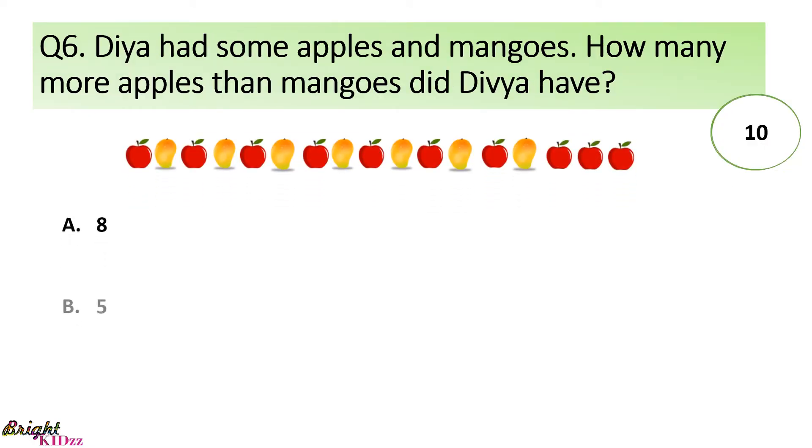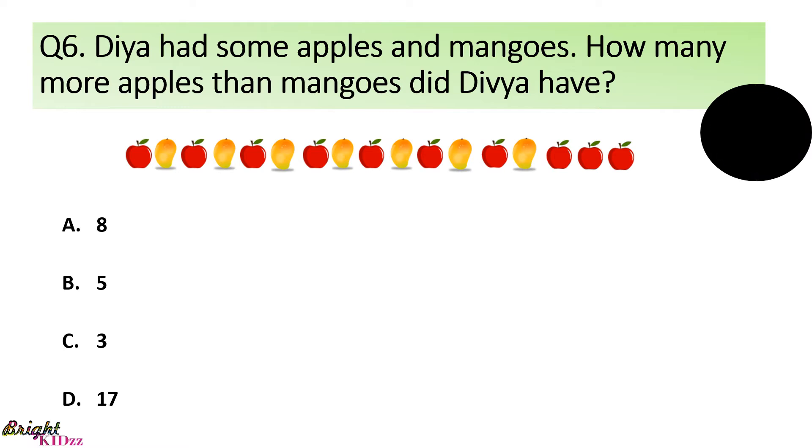Diya has some apples and mangoes. How many more apples than mangoes did Divya have? Answer: We can see there are 3 apples extra. So, answer is 3.